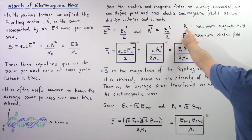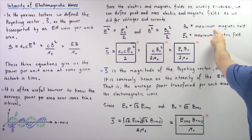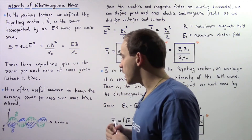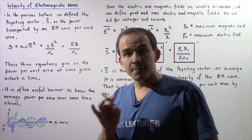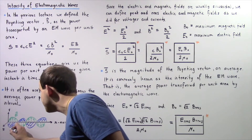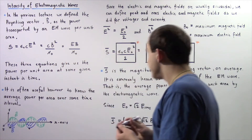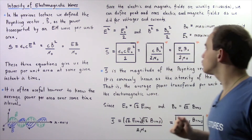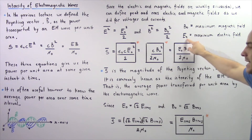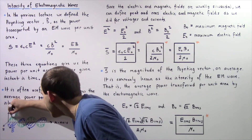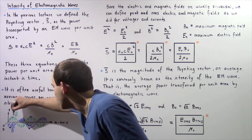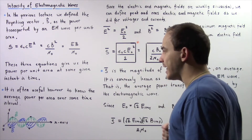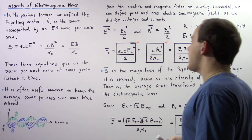B0 symbolizes the maximum or peak value of the magnetic field. Examining the diagram, the peak magnetic field is reached at these two points. Similarly, the maximum electric field, also known as the peak electric field, is given by E0, and these values are obtained at two specific positions on the electromagnetic wave diagram. Now we are ready to calculate the average power per area.